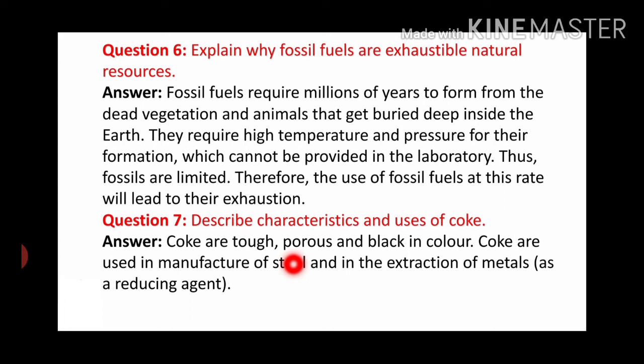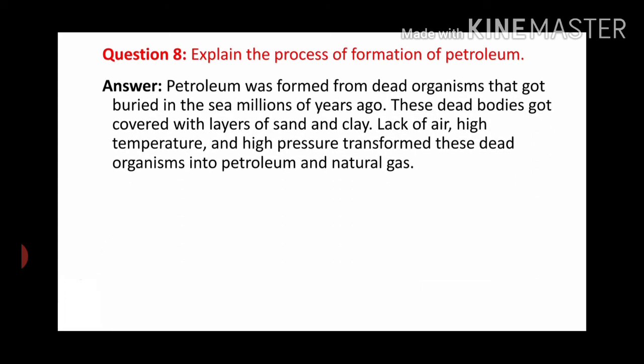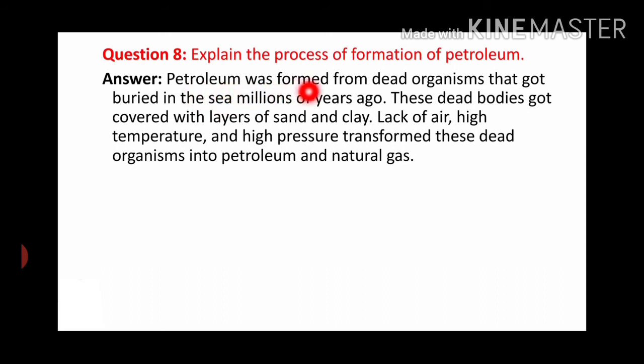The next question is: Explain the process of formation of petroleum. The answer is: Petroleum was formed from dead organisms that got buried in the sea millions of years ago. These dead bodies got covered with layers of sand and clay. Lack of air, high temperature, and high pressure transformed these dead organisms into petroleum and natural gas.